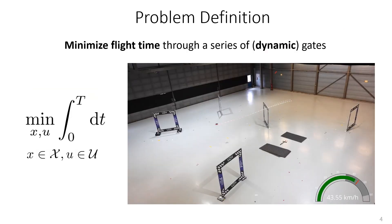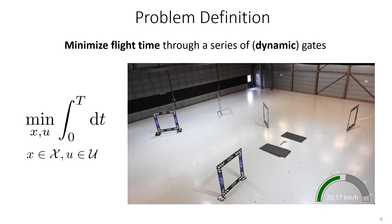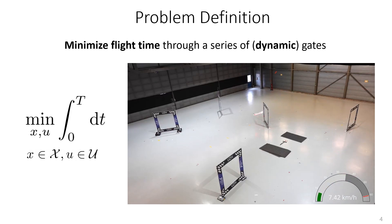Let's jump directly to the definition of the drone racing problem. We define the drone racing task as an optimization problem where the time is minimized. This optimization is subject to the system dynamics and constraints, and to the constraints of the track, meaning passing through a series of gates in a certain order. But the question is, how do we solve this problem?